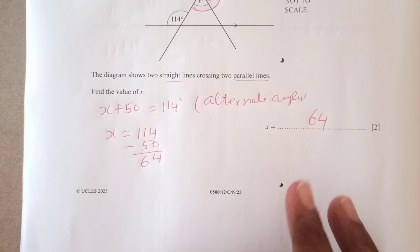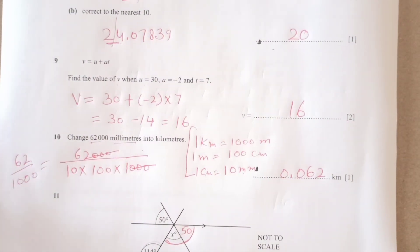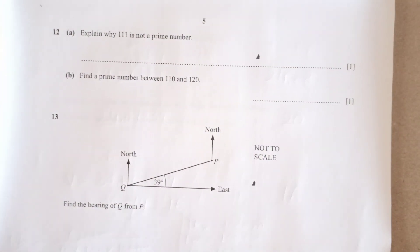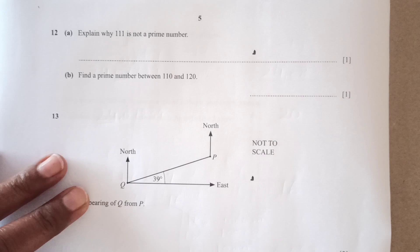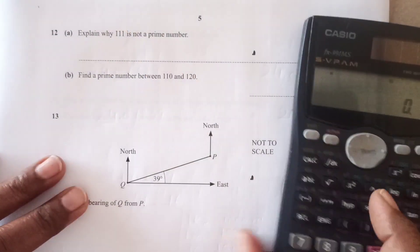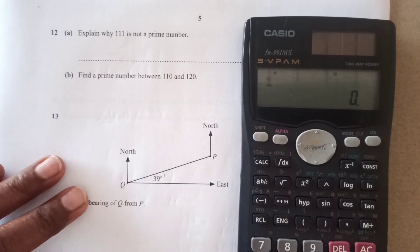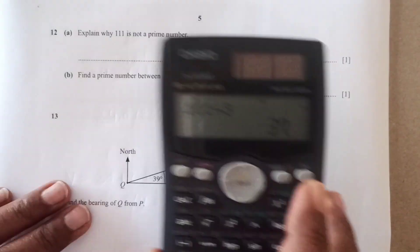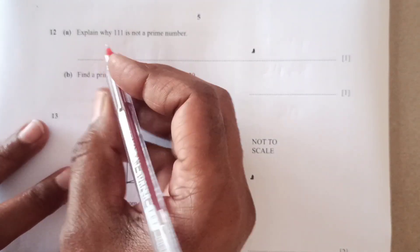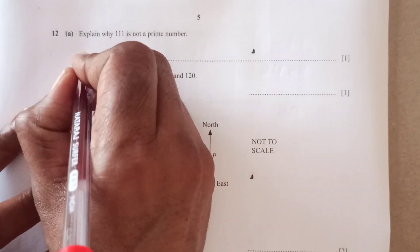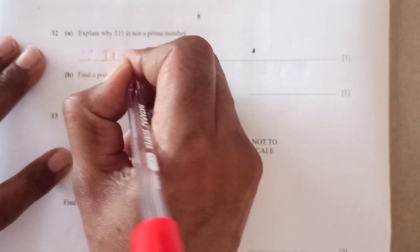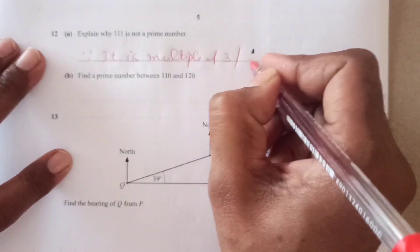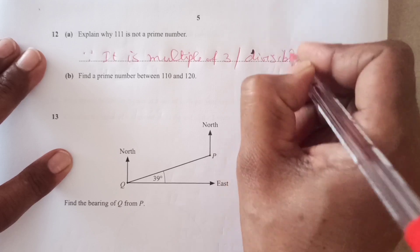Now let us move to the next question. Explain why 111 is not a prime number. So this is not a prime number because let us see 1, 1, 1, 3. Sorry, 1, 1 and 1 when you add up it becomes 3. So that means this is going to be divisible by 3. So we have 37. Now also this is multiple of 3. You just need to write down one reason for that because it is multiple of 3 or you can say is divisible by 3.